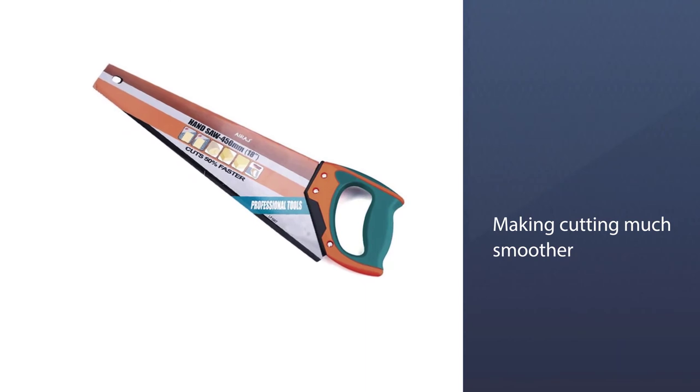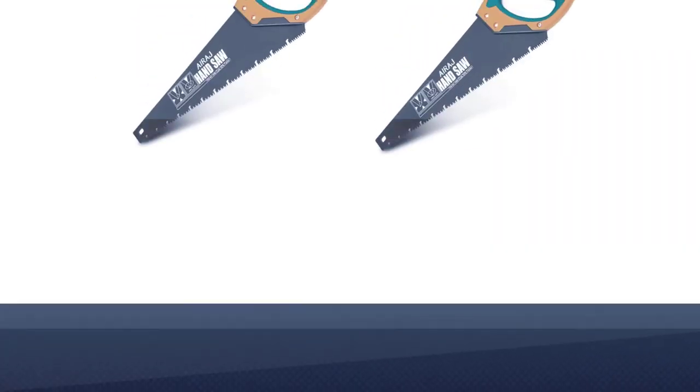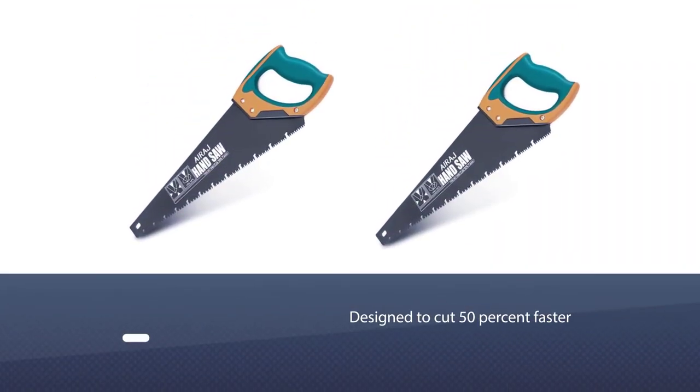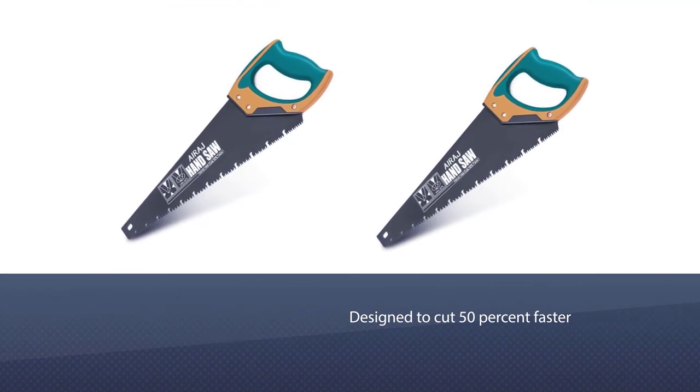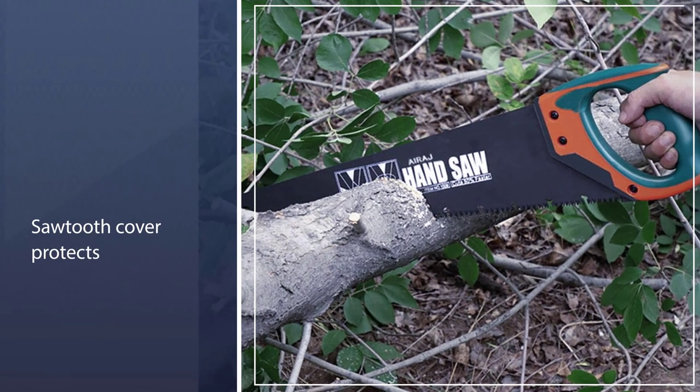The anti-backing grooves expel wood chips so they don't get blocked, making cutting much smoother. With three cutting surfaces on the teeth, this blade is designed to cut 50% faster than traditional hand saws.